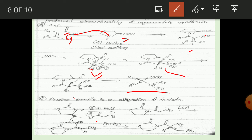LDA is used as a base to abstract a proton, generating a lithium-chelated enolate. In the next step, CH2I2 attacks the double bond; the CH2 group is incorporated and the iodide leaves, forming the alkylated adduct.